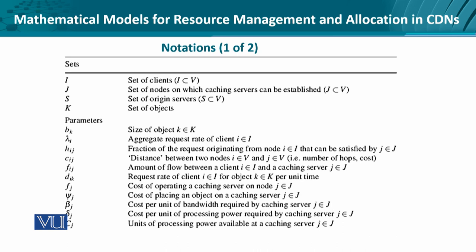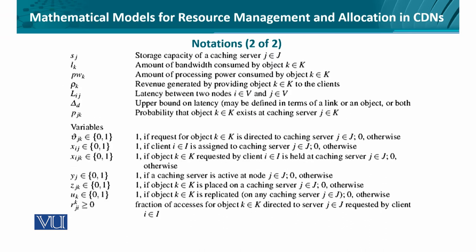Before we move to server placement, let's look at some typical notations. These notations are the basics in mathematical modeling. We have clients which make requests for some content in the form of objects. Then we have the servers, the content itself — the objects — and then the requests which are made in the form of HTTP or SOAP requests. Then the physical distance between the client and the server, and the costs incurred in operating the server, including computing, storage, and bandwidth requirements.